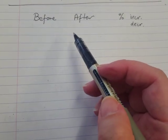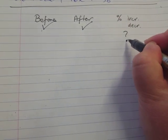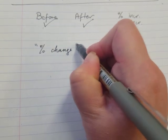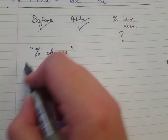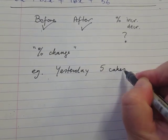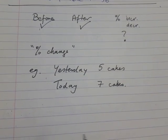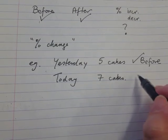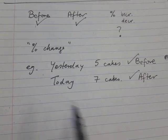The third type is where the question tells you the amount before and the amount afterwards, and you have to work out what percentage increase or decrease it was. This method is called percentage change — find the percentage change, or it might say find the percentage increase or decrease. An example: yesterday I ate five cakes and today I ate seven cakes — find the percentage change. Yesterday is the before, today's number is the after, and you have to work out the percentage increase or decrease. This is called the percentage change method.